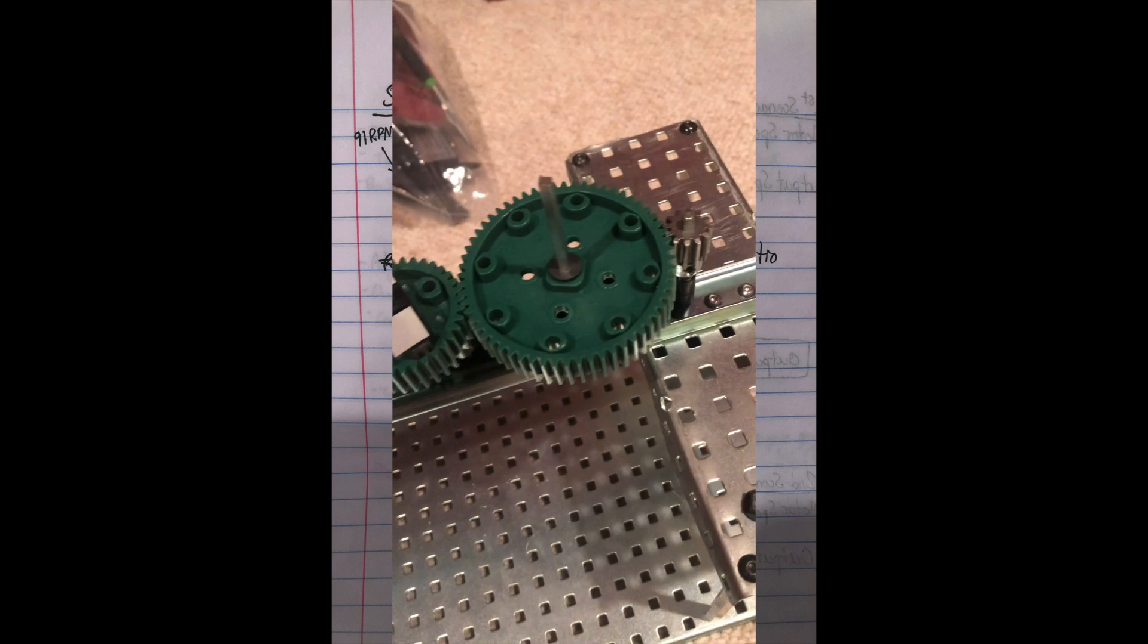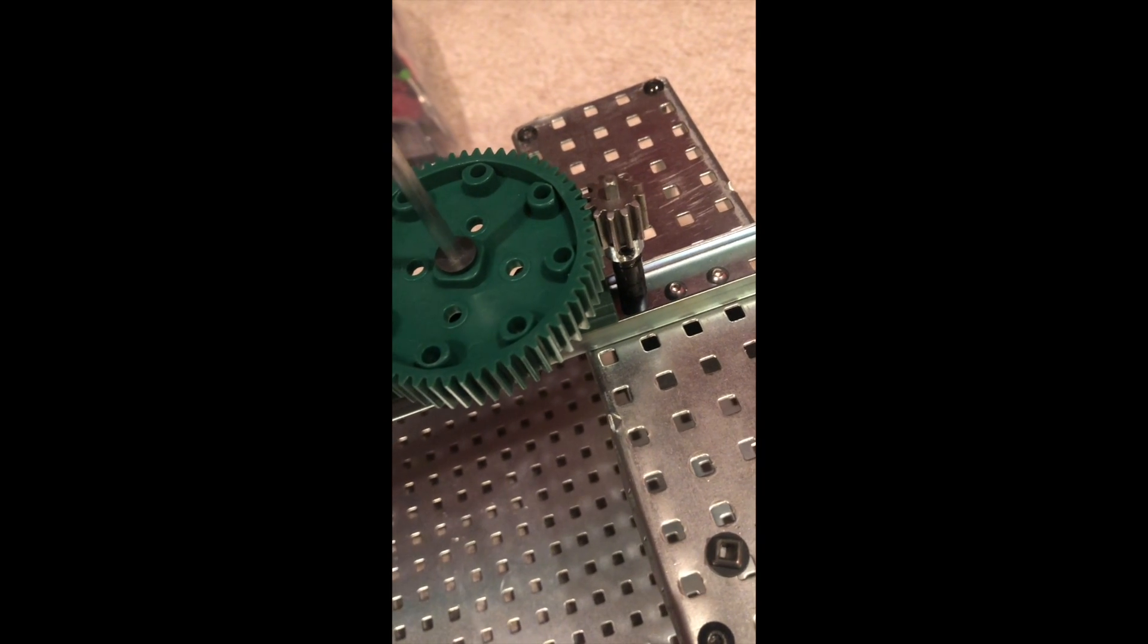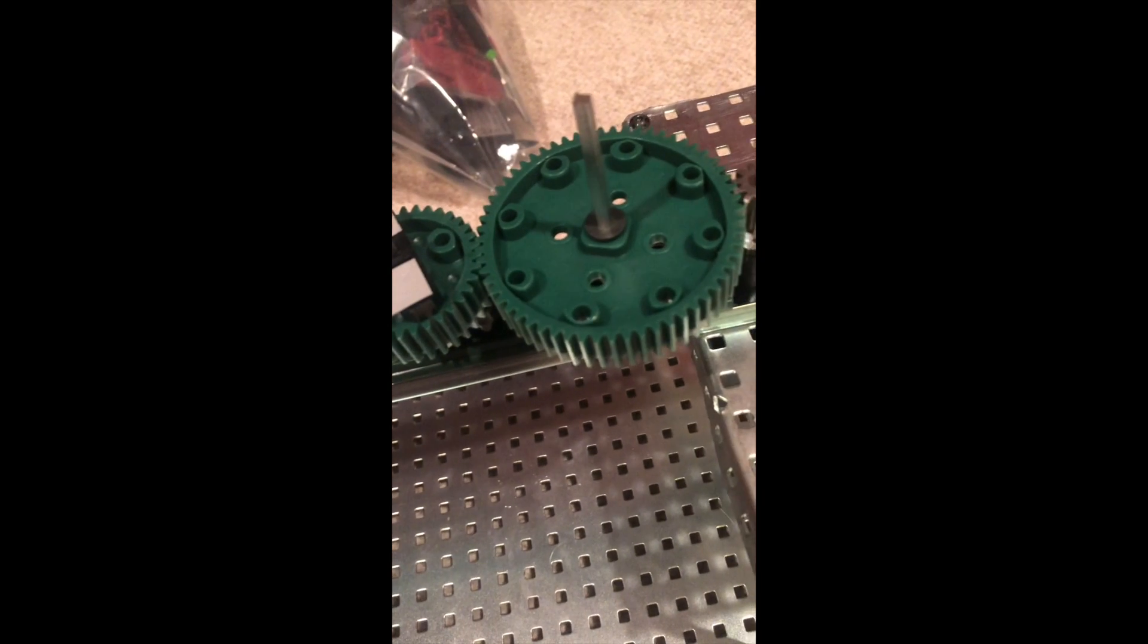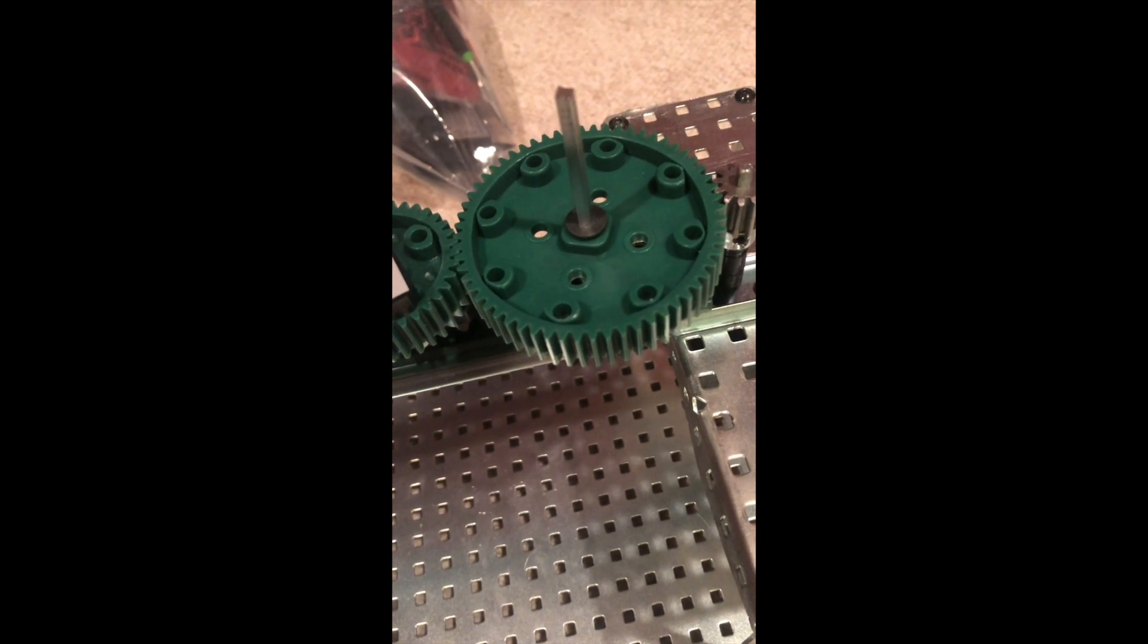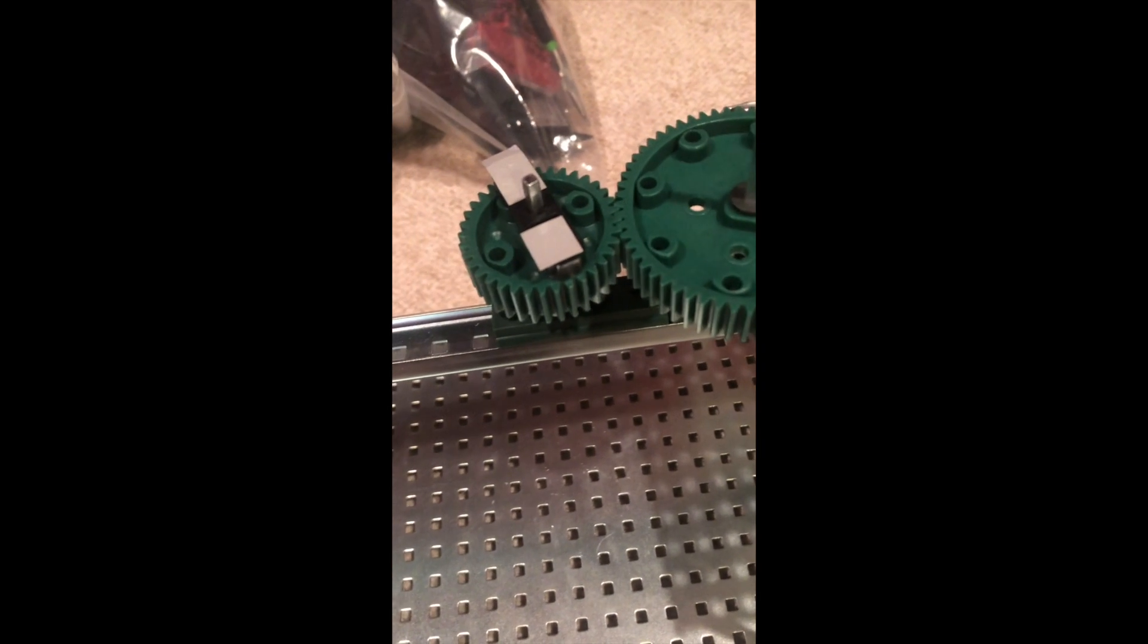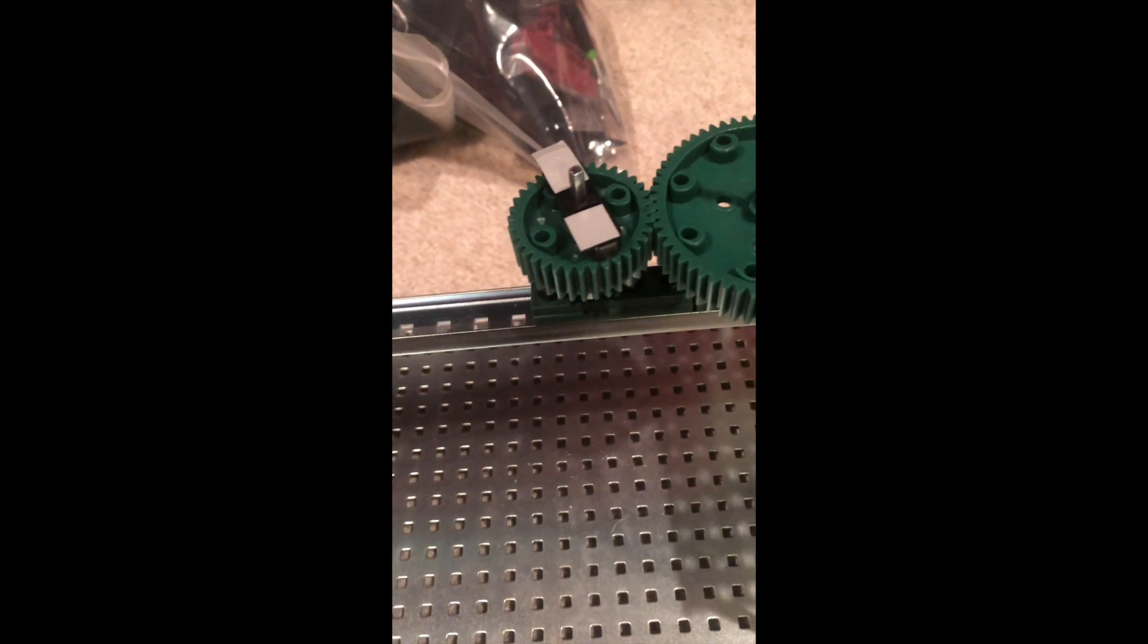Here we have our third scenario where we have a gear train. It starts with a 12 tooth gear, then it goes onto a 60 tooth, and then finally a 36 tooth. Now the 60 tooth will just act as an idler, so it won't really affect anything. But the speed should still drop since it's a smaller gear going into a bigger gear. Let's go ahead and test it.